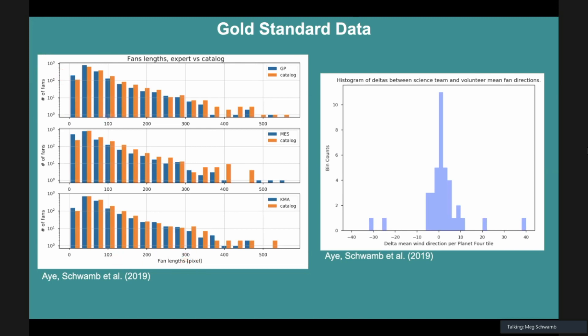We're individually in blue and the catalog is in orange, and we have number of fans plotted versus the fan length. Overall, the variation between all three of us on the science team is that we don't agree 100%. We vary amongst ourselves in terms of our analysis. But overall, even with the catalog, there is some variation, but it's very similar to the variation between the three experts.